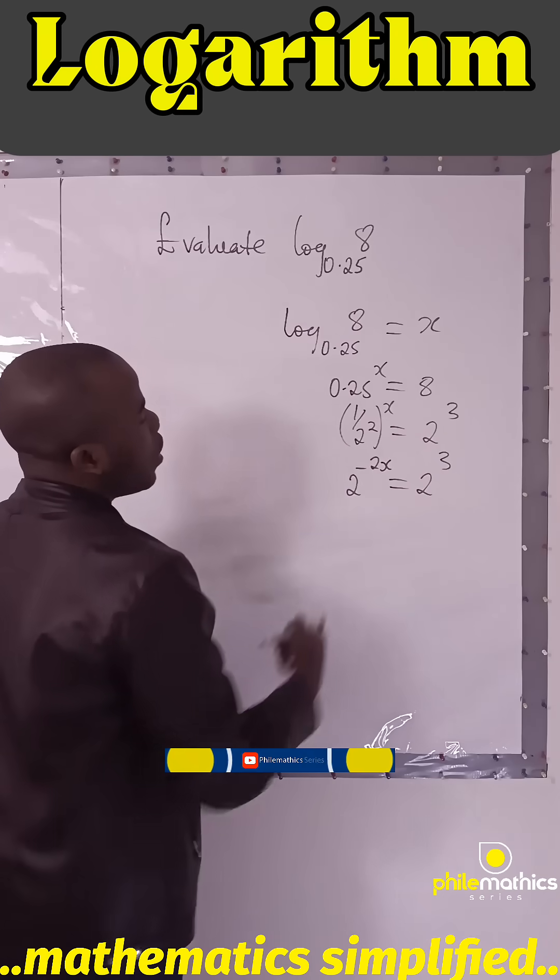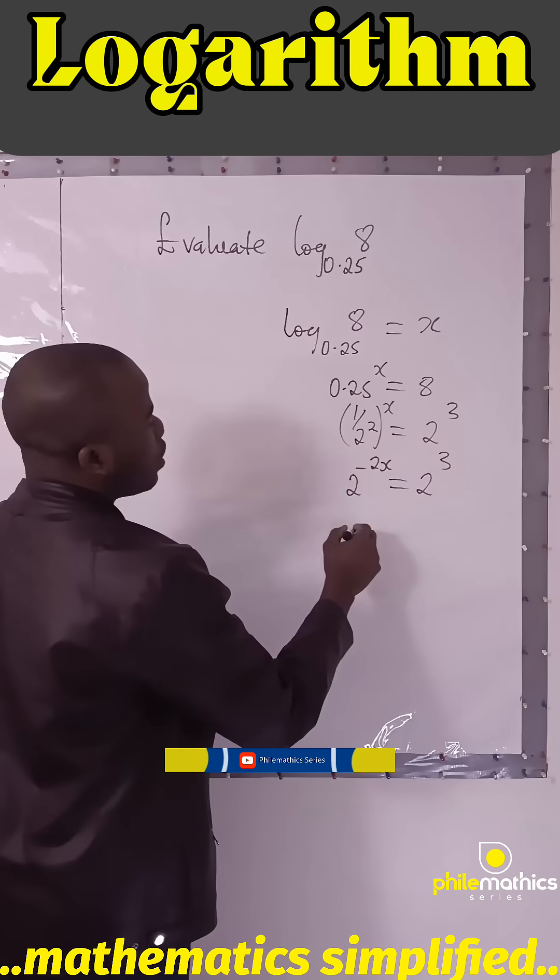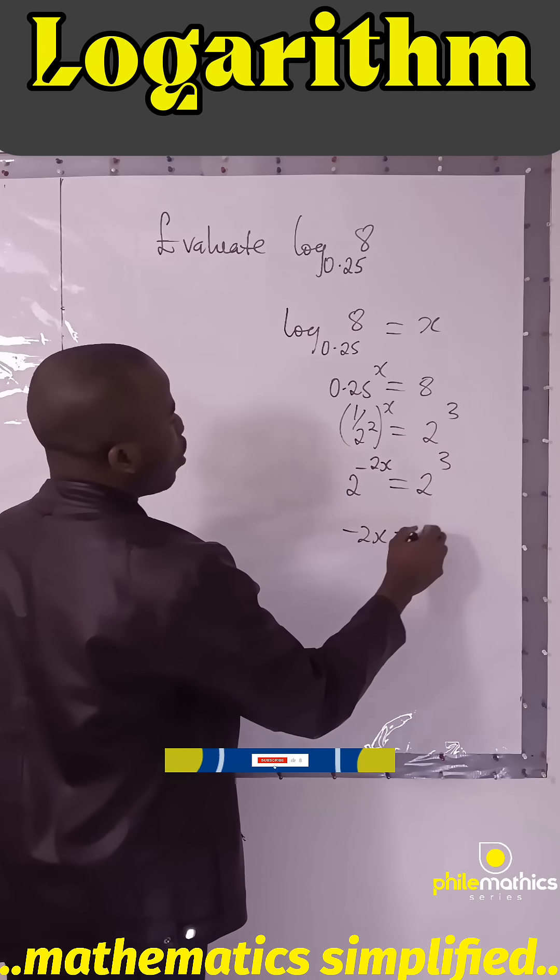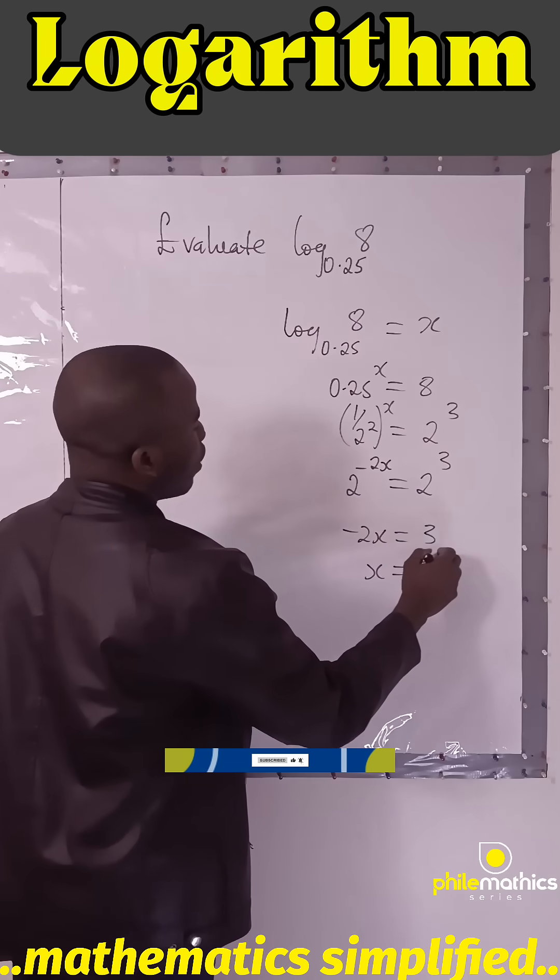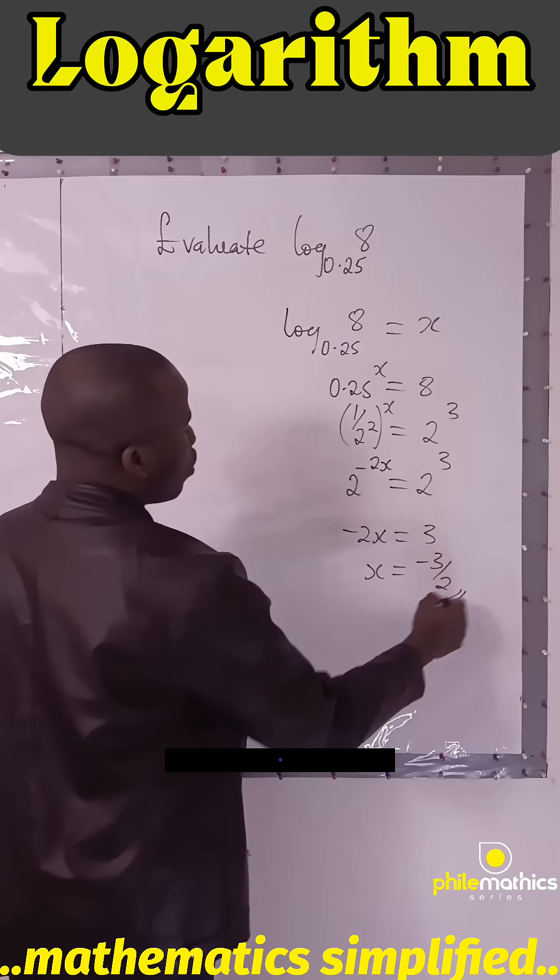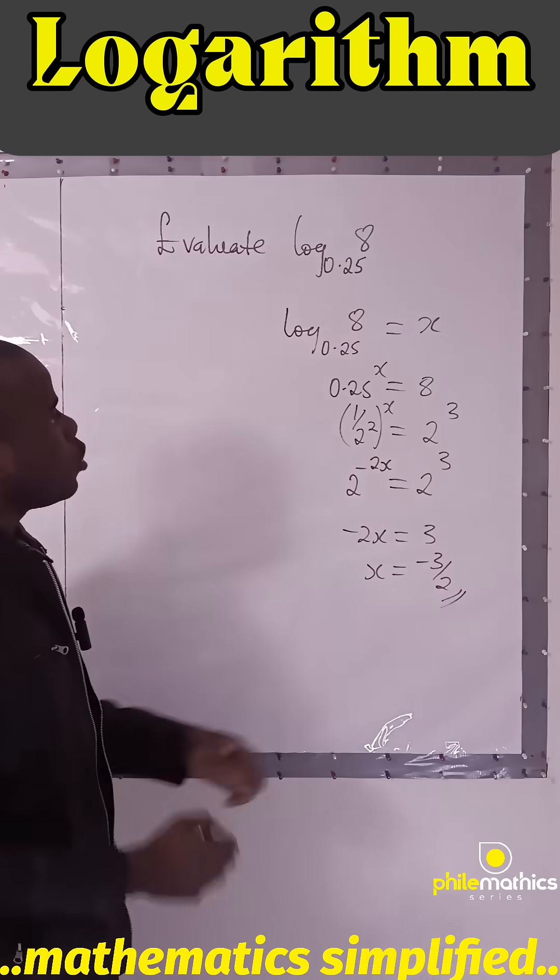Since they are in the same base, their powers have to be the same. -2x has to equal 3, so x will be -3 over 2.